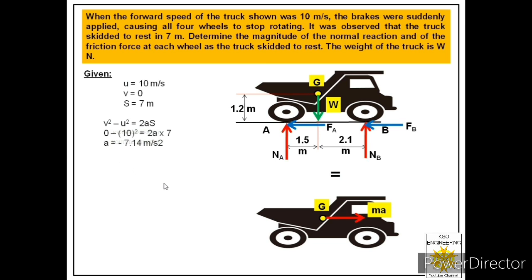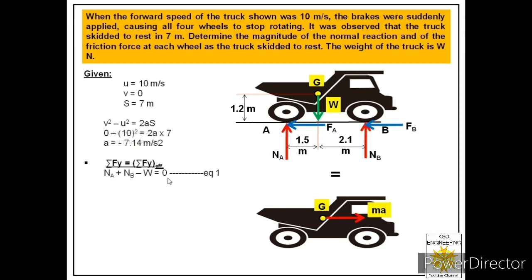Now we apply summation Fy = summation Fy effective. In the y-direction, three forces act: normal reaction NA, normal reaction NB, and weight W acting downward. Since the truck is not moving in the y-direction, the effect is zero. The equation becomes: NA + NB − W = 0.